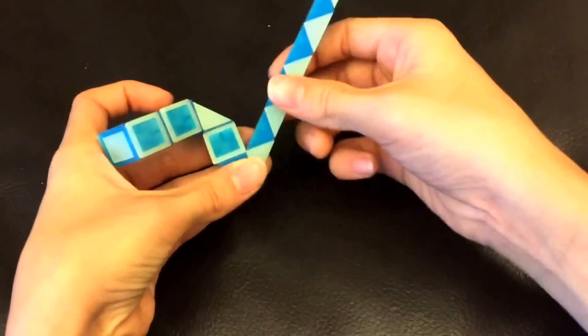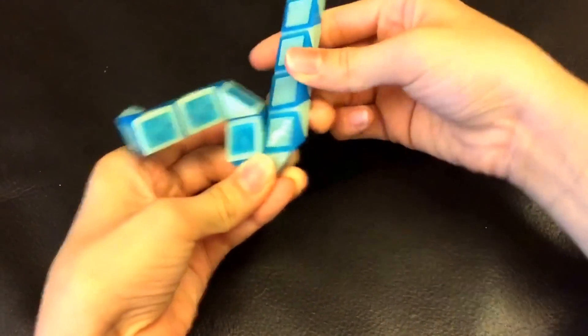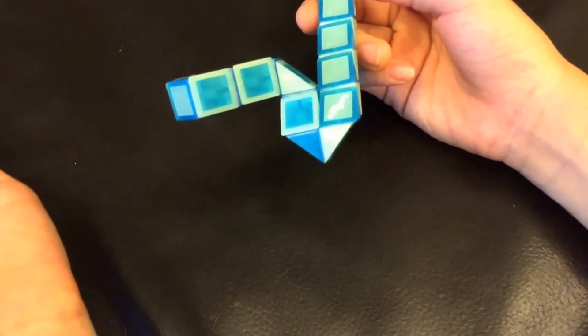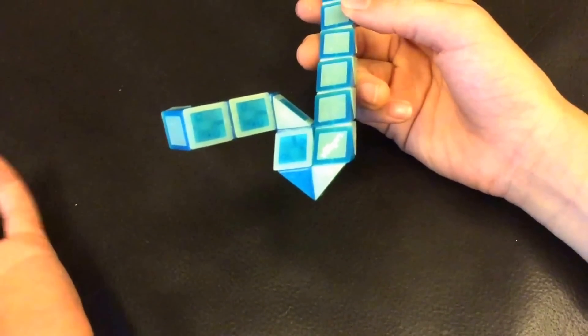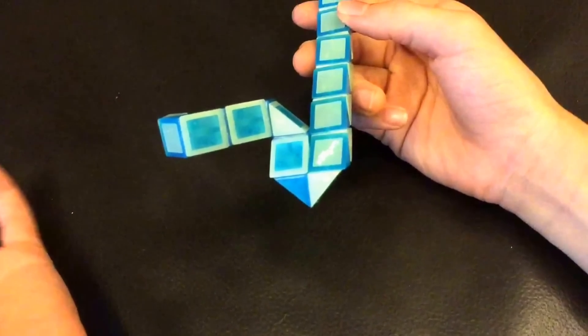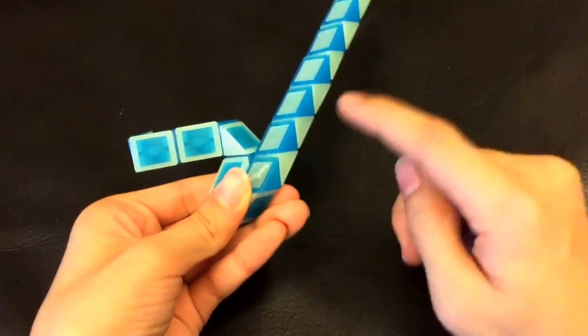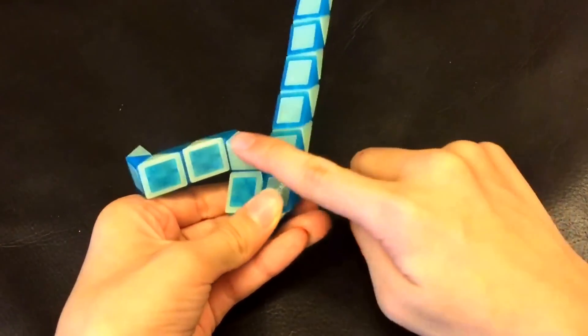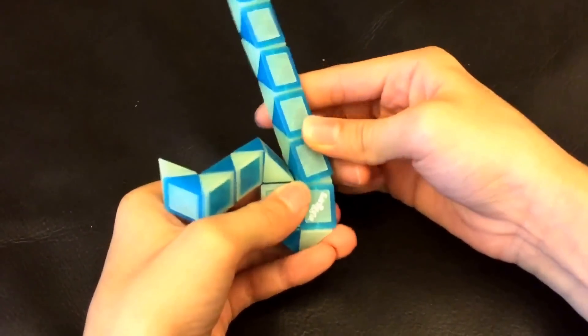Now this blue one is going to go down and then you're going to move this blue one so that these two white ones match like this.